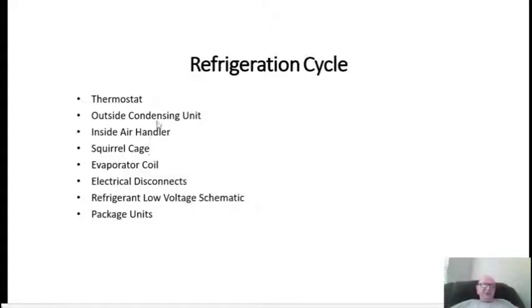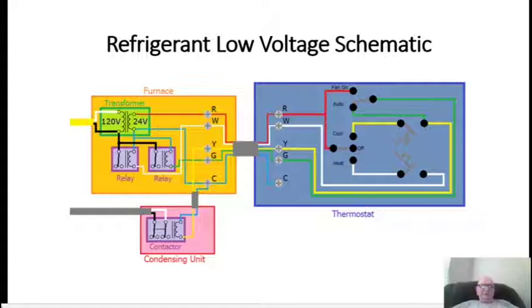First, let's get into the thermostat. This is your typical air conditioning thermostat with regular heat and cool. You've got a red wire coming from your transformer that goes to the R, which is your fan auto selector. When in auto, your fan will not come on until the thermostat calls for cooling or heat, depending upon what mode you're in. Right now it's in the off position.